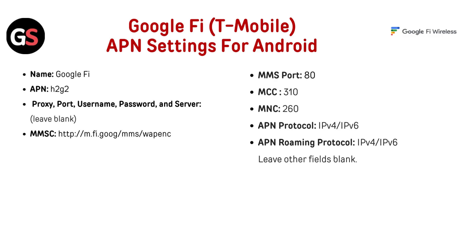Google Fi T-Mobile APN settings for Android: Name — Google Fi, APN — H2G2. Proxy, port, username, password, and server leave blank. MMSC — HTTP m.fi.google.mms.wep.enc. MMS Port — AT, MCC — 310, MNC — 260. APN Protocol — IPv4 or IPv6. APN Roaming Protocol — IPv4 or IPv6.